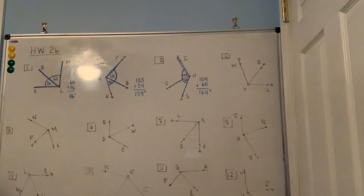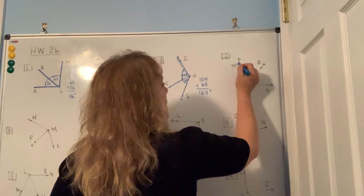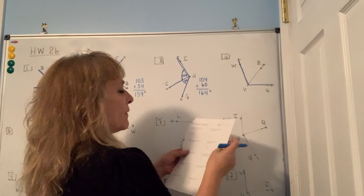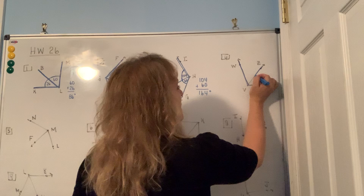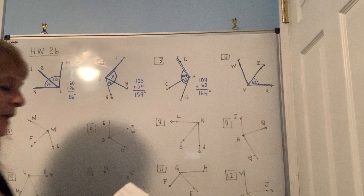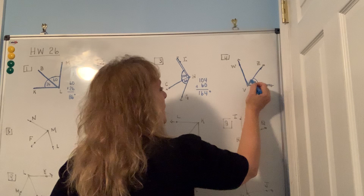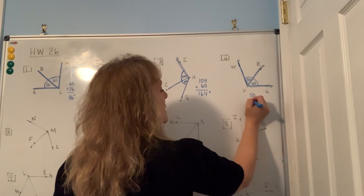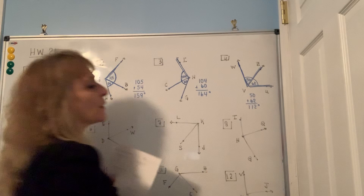Number four says find the measure of angle WVU, which is the large angle. ZVU, the bottom half, is 62 degrees, and angle WVZ is 50 degrees. To find the total angle you add them up: 50 plus 62 gives you 112 degrees.